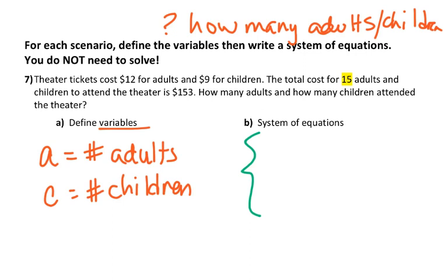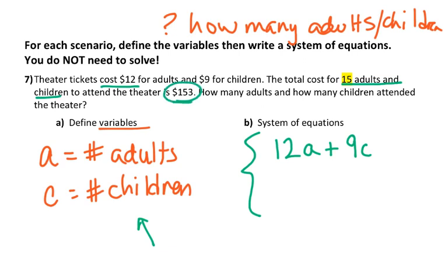Let's read the rest of the problem. The total cost for 15 adults and children — that means 15 people total — is $153. I don't know how many are adults or children. To find out, I'll write an equation about cost. It costs $12 for every adult, and $9 for every child. All together, that costs $153. Since this equation is about money — $12, $9, $153 — all those things are talking about money.